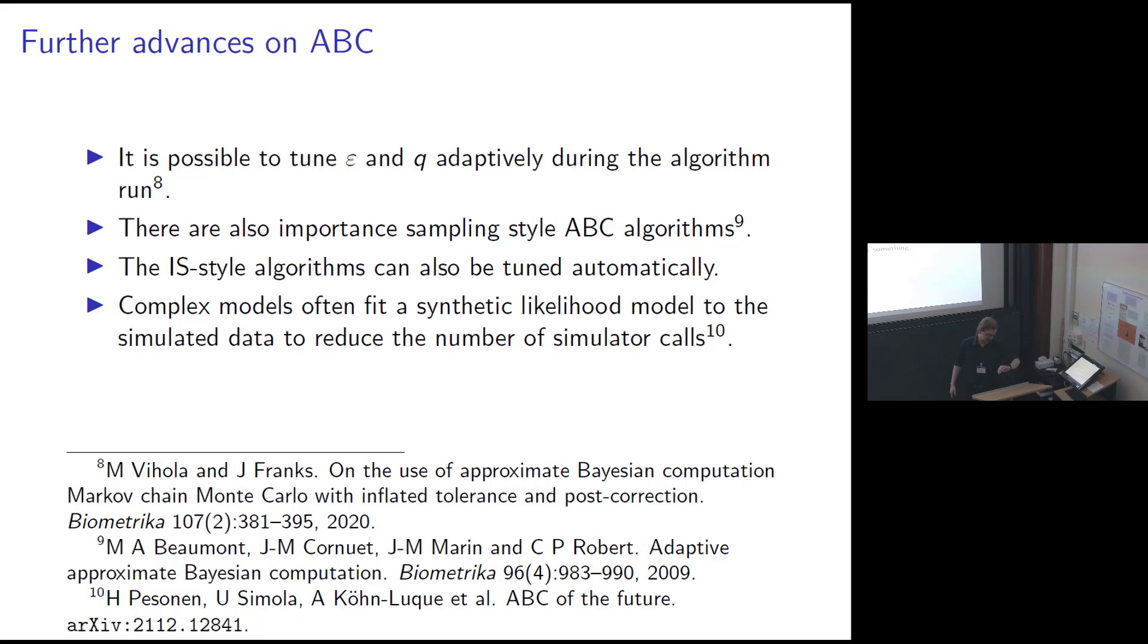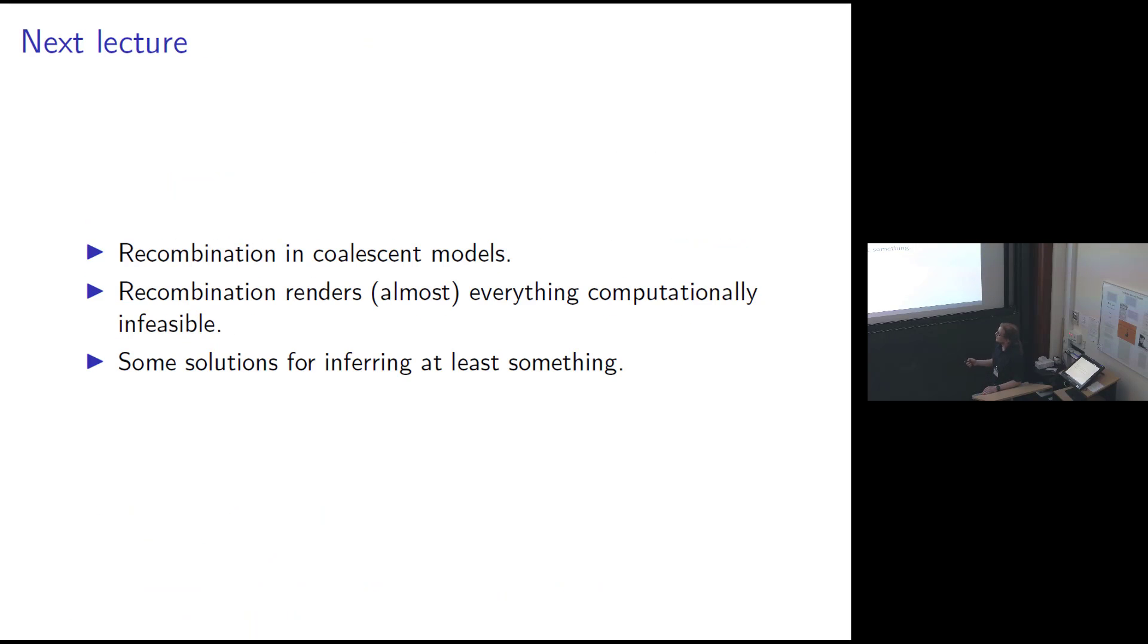So I'm conveniently out of time, and here's just a brief reminder of what's coming up next time, so recombination in coalescent models. It will foil all of the algorithms we've seen thus far, with the partial exception of ABC, and there are still some solutions you can look at for fitting models to that sort of data, whether it's ABC algorithms or using these conditional sampling distributions directly. That's what I'll be talking about on Wednesday. Thank you for your attention.